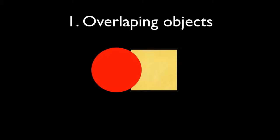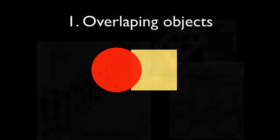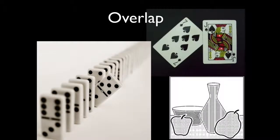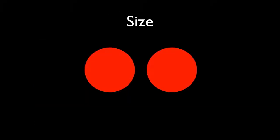Let's take a look at a couple of examples of overlap. You can see how it's used in both photography and art to show objects that are clearly in front of each other and objects that are clearly behind others.